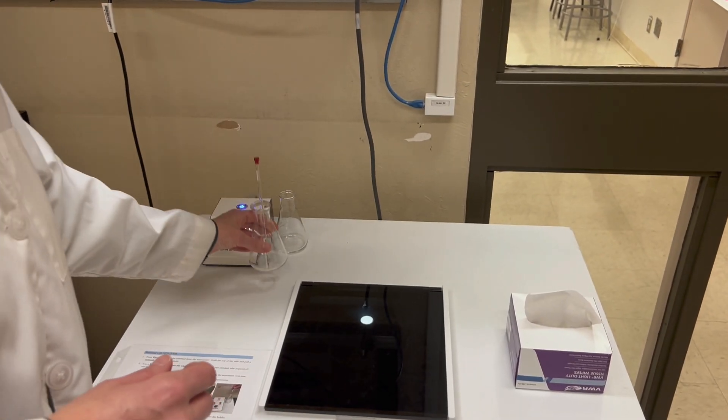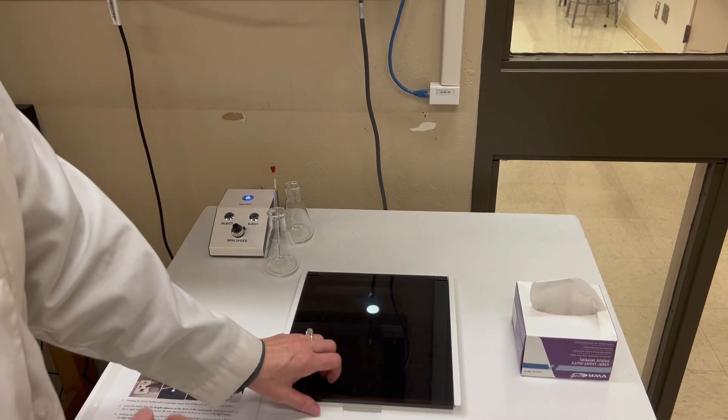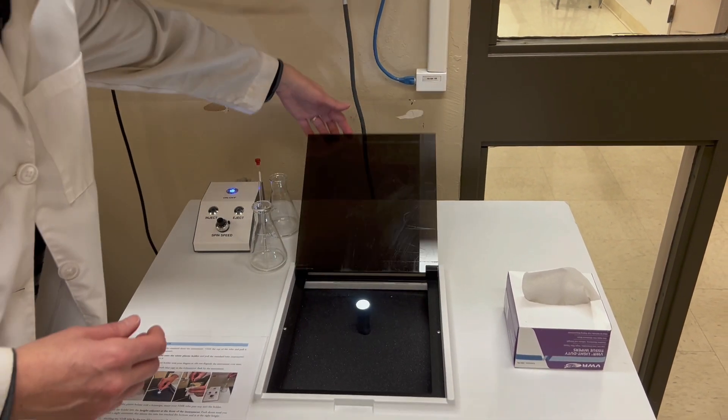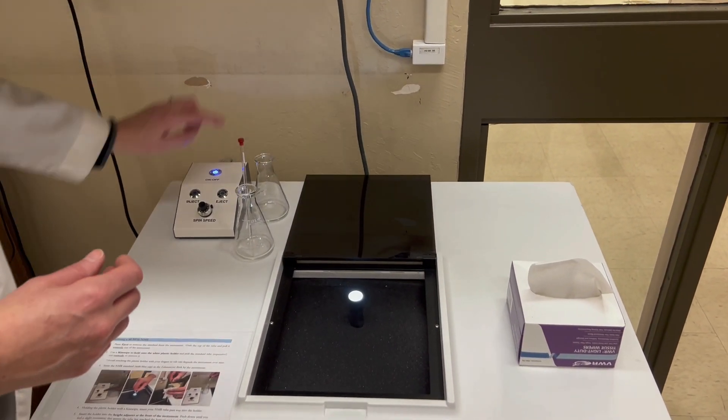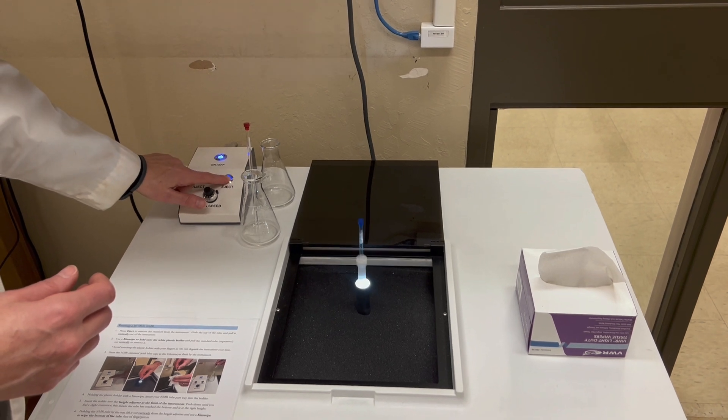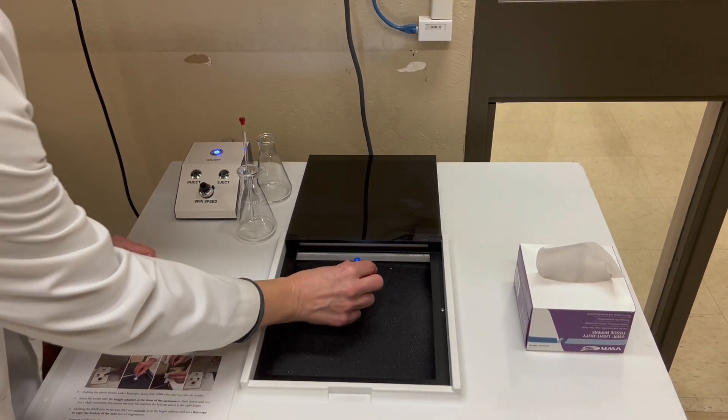Then at the NMR you can set your sample down and open up the flap. You can push the eject button and that will shoot air up through the machine and push out the old sample.